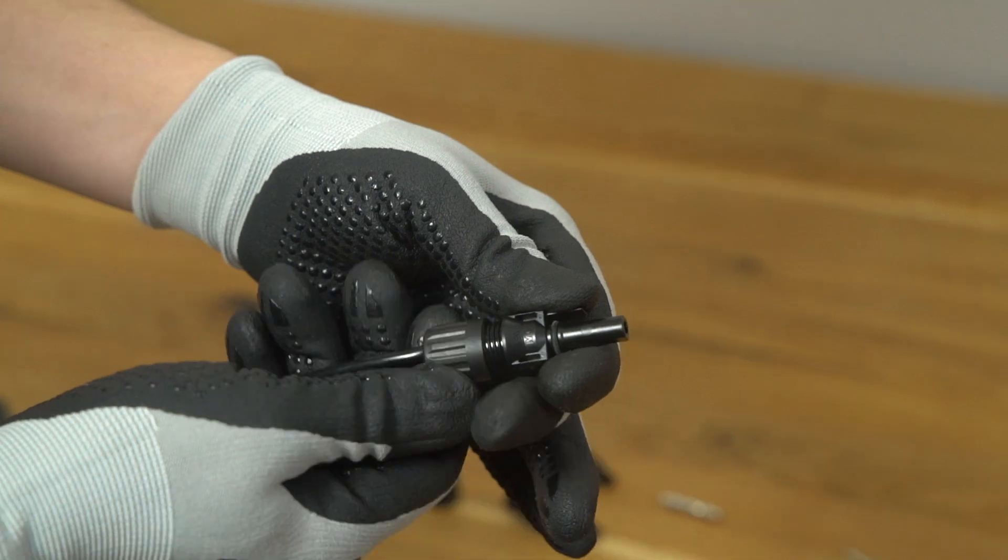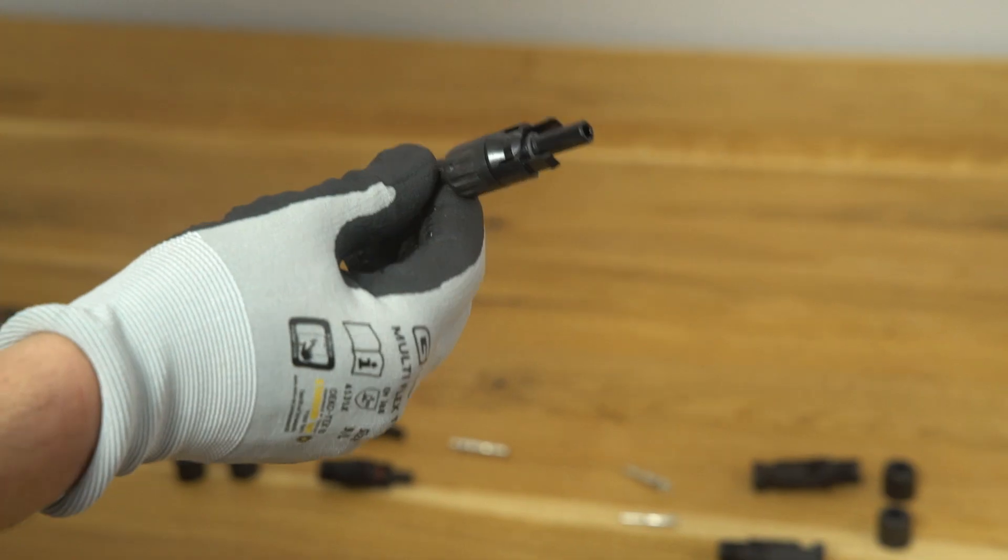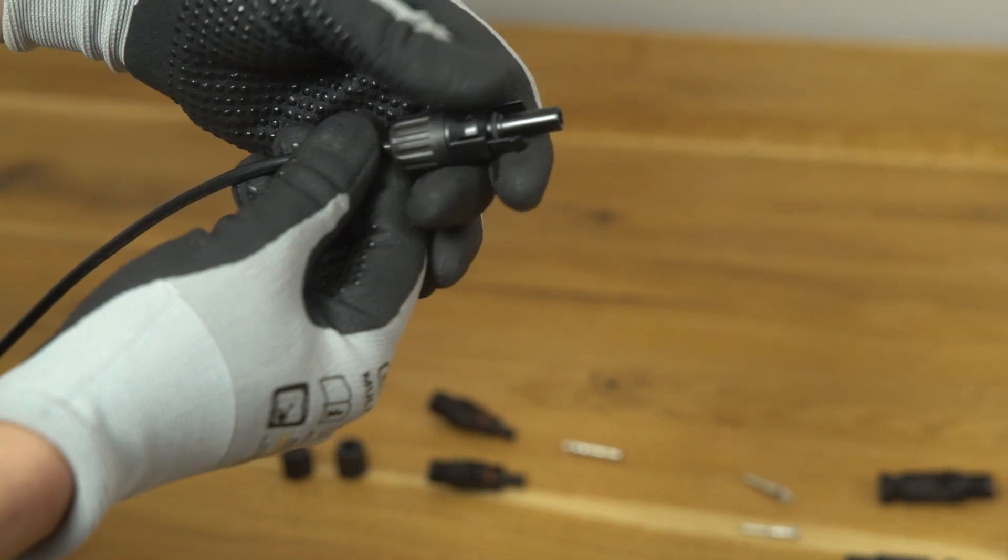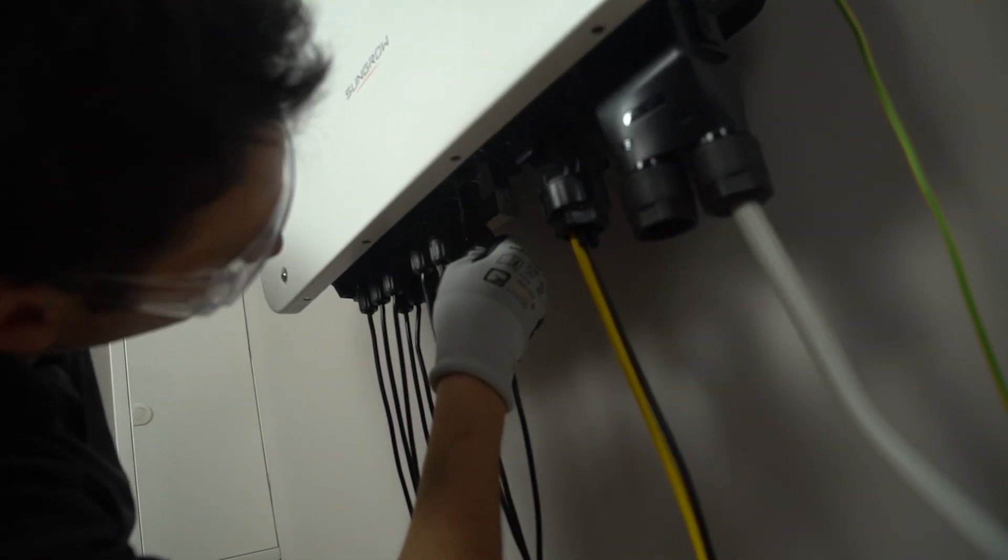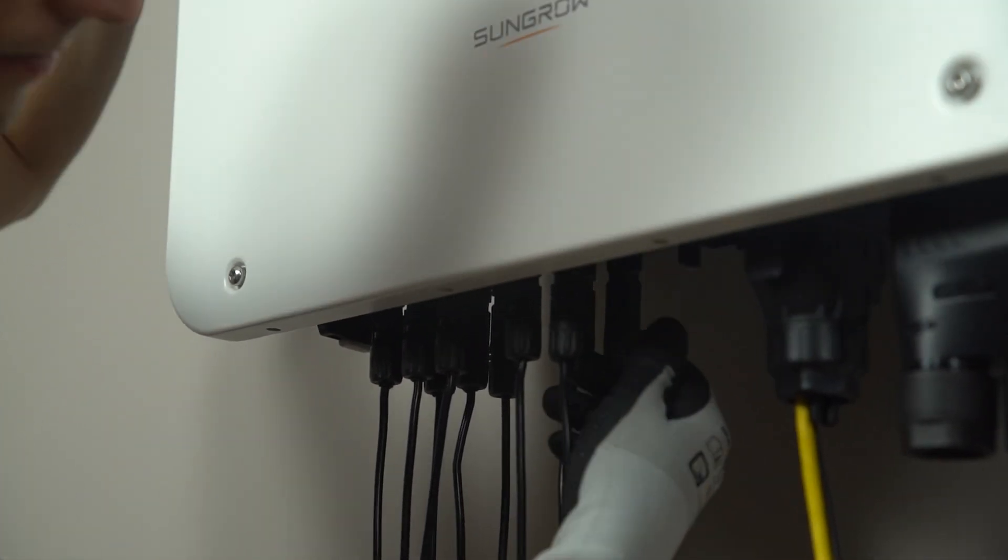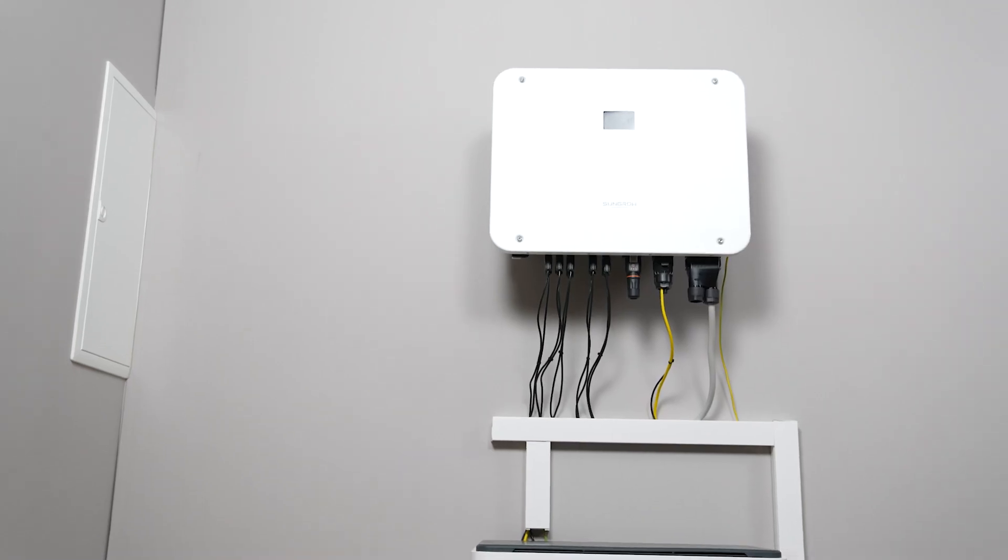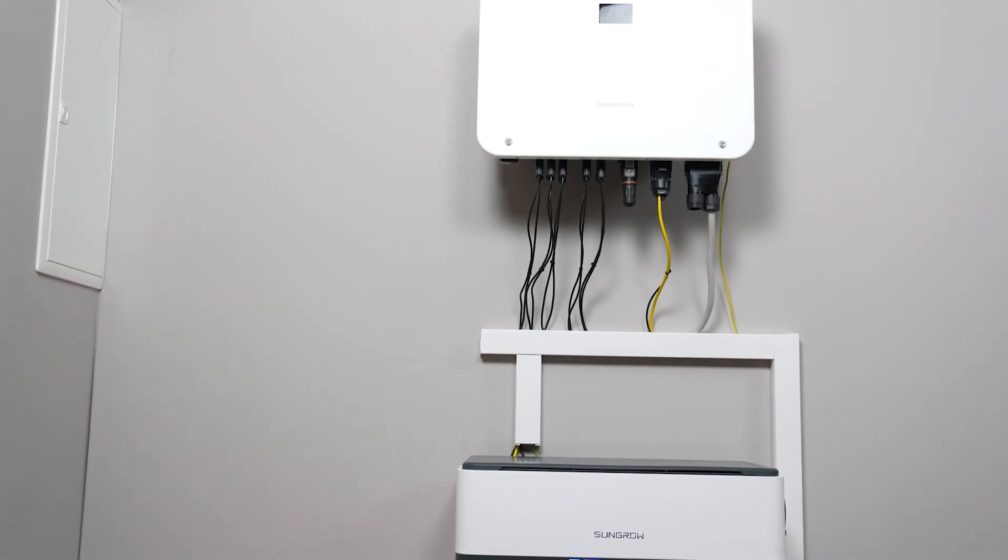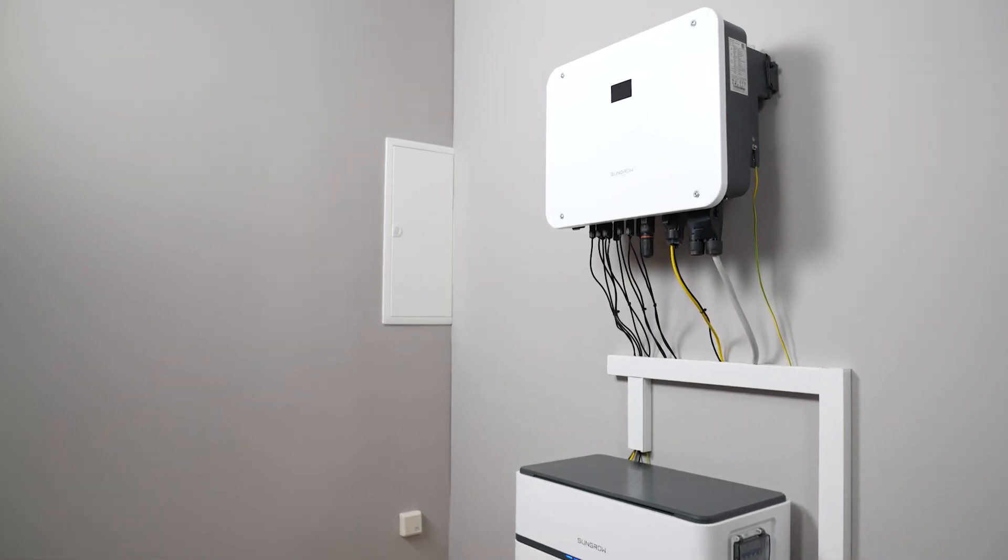Tighten the cable gland with the MC4 wrench. Check again for polarity correctness and plug the connectors into the BAT plus and BAT minus terminals. A clear click can be heard. The cable connections on the inverter side are done for the battery connection. Check out SunGrow's SBH installation video to continue the installation on the battery side.